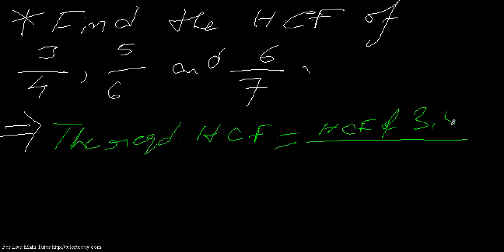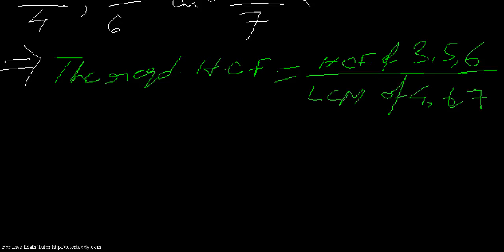3, 5, 6 - oh I'm sorry, I need to find the LCM of the denominator. So the formula goes like this: HCF of the numerator divided by LCM of the denominator. That means 4, 6, 7. So for this, let me find the HCF of 3, 5, 6 first.